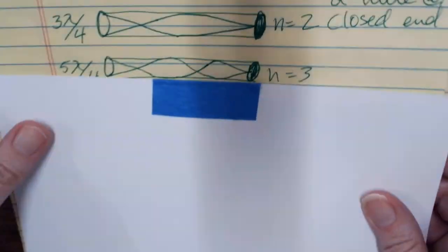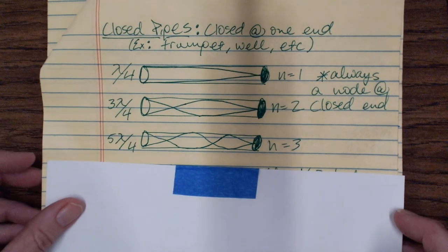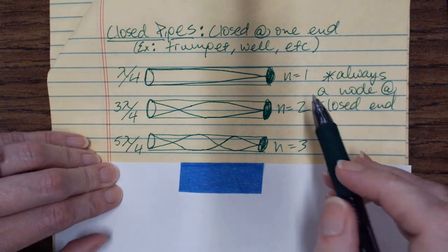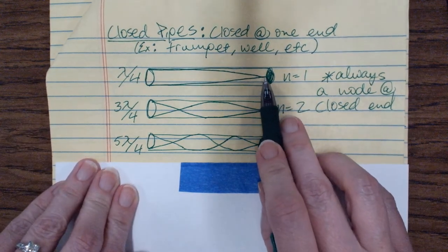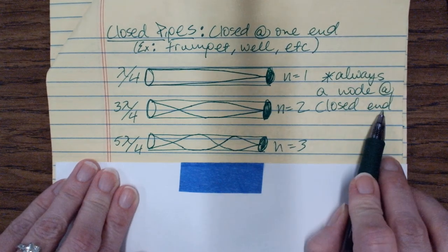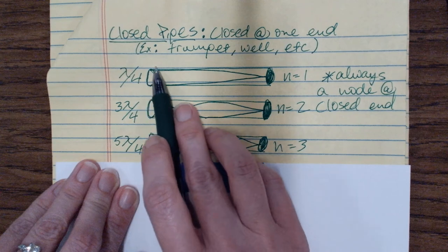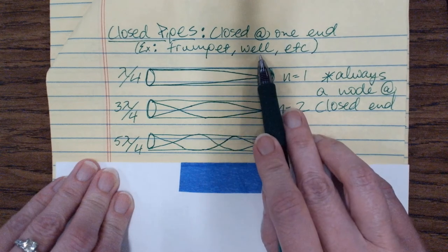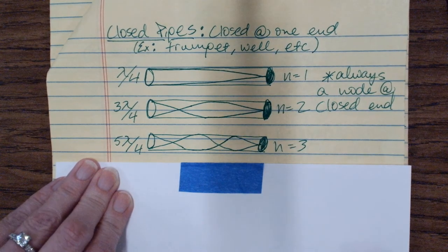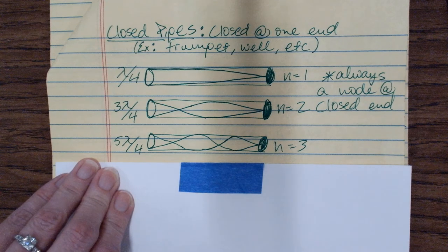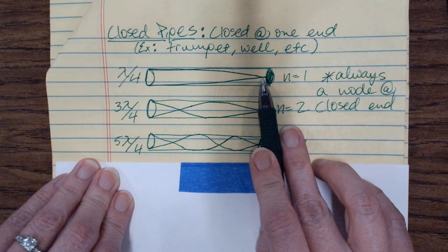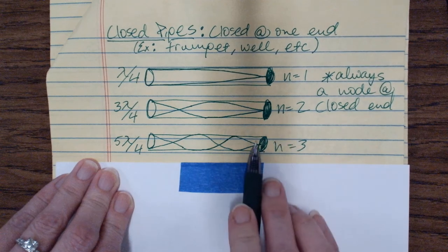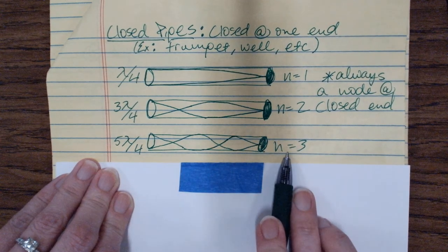Now for closed pipes, things are a little different. For a closed pipe, n=1 has a node only at the closed end. The open end is where the pipe vibrates most, with the most energy — that's what makes all the sound. Examples include a trumpet or blowing into a coke bottle. For n=1 there is one node, for n=2 there are two nodes, and for n=3 there are three nodes.